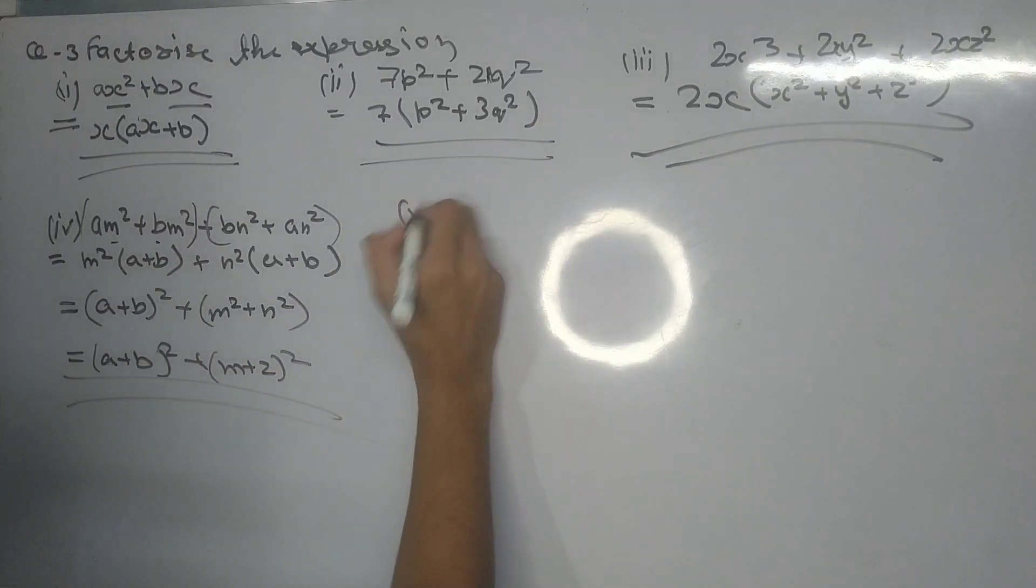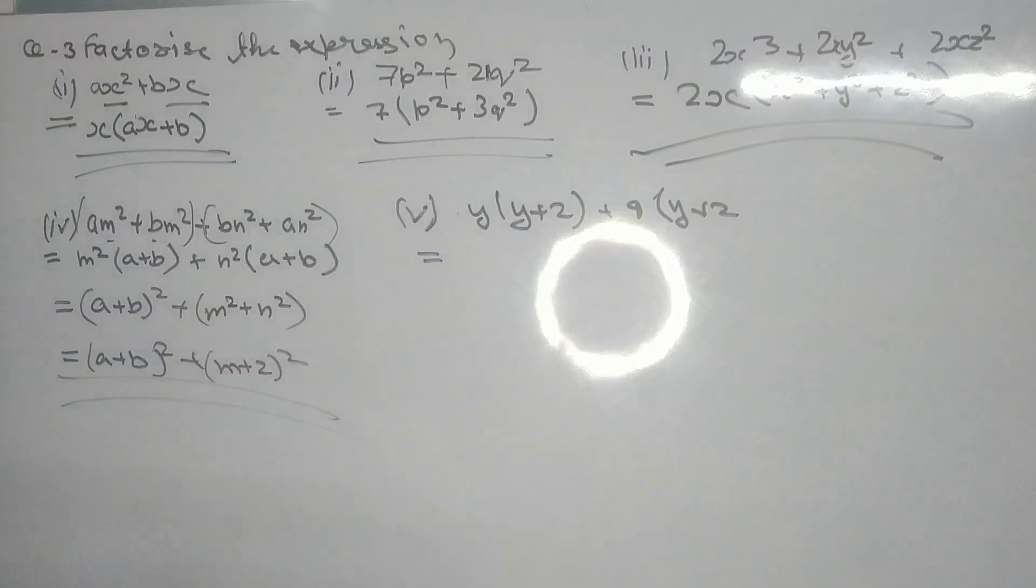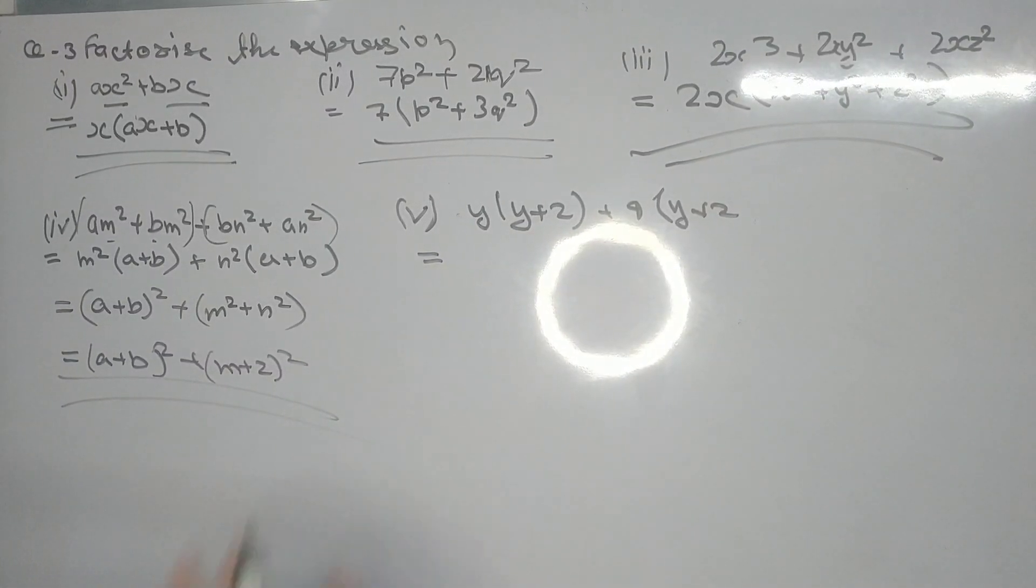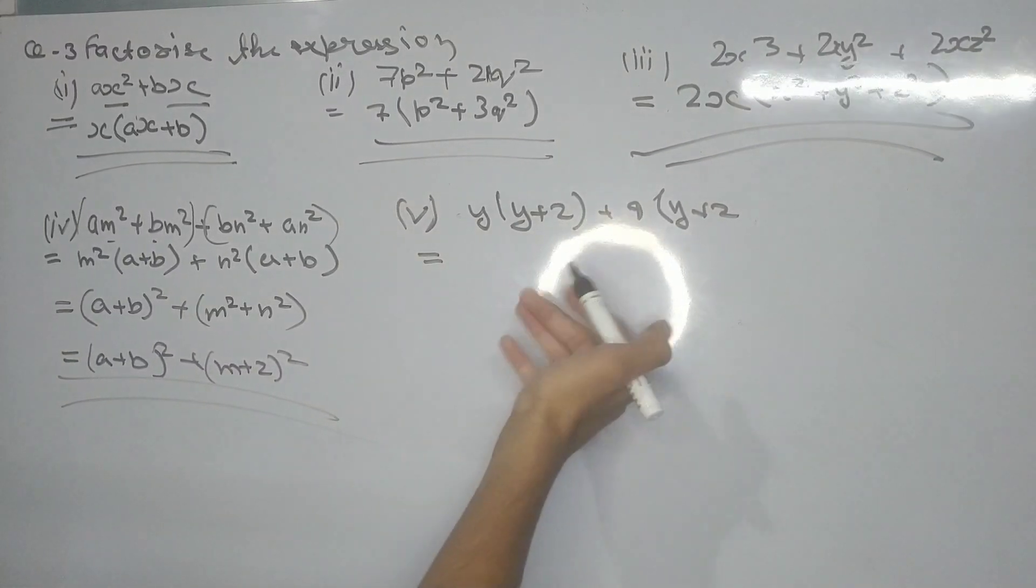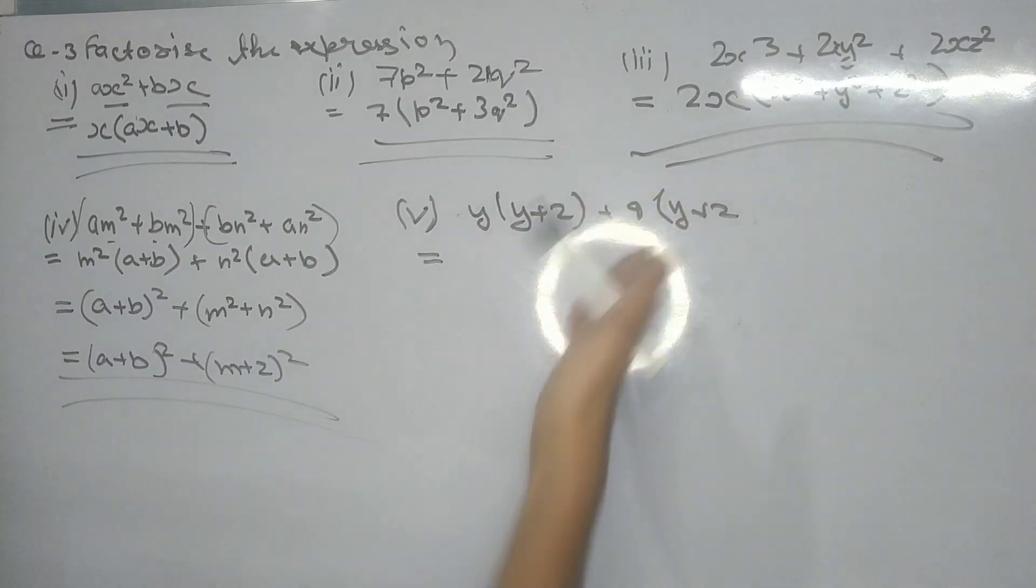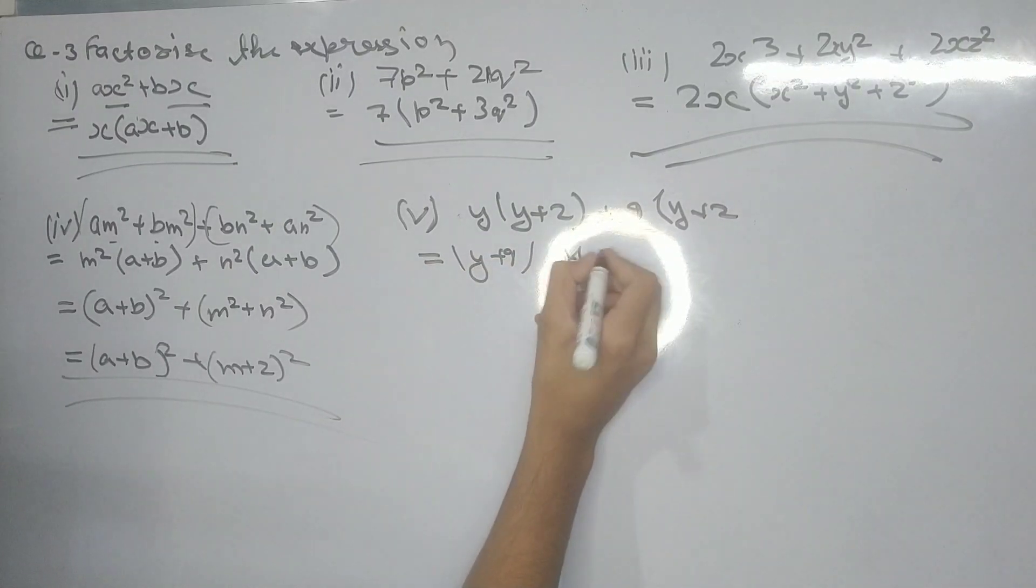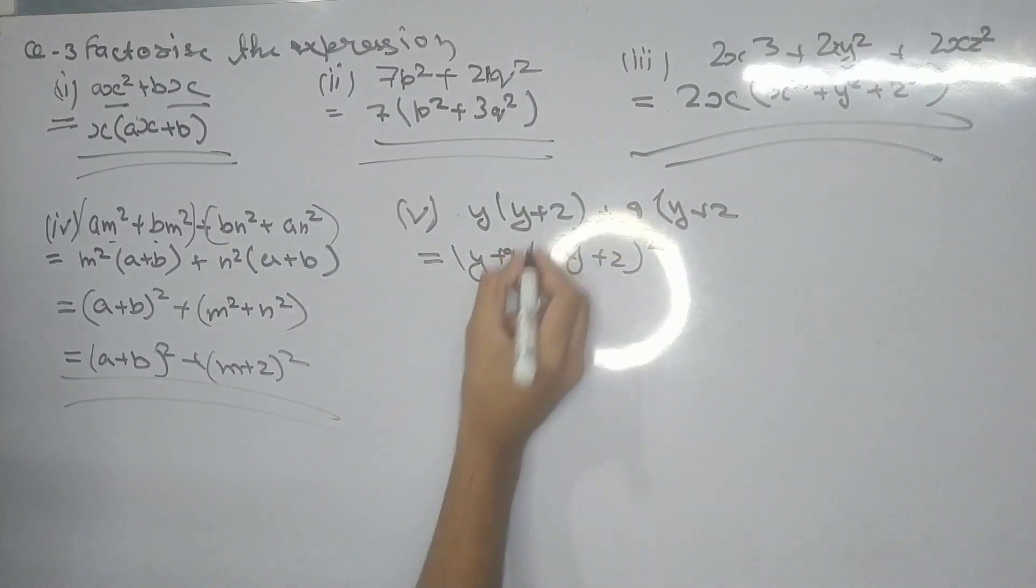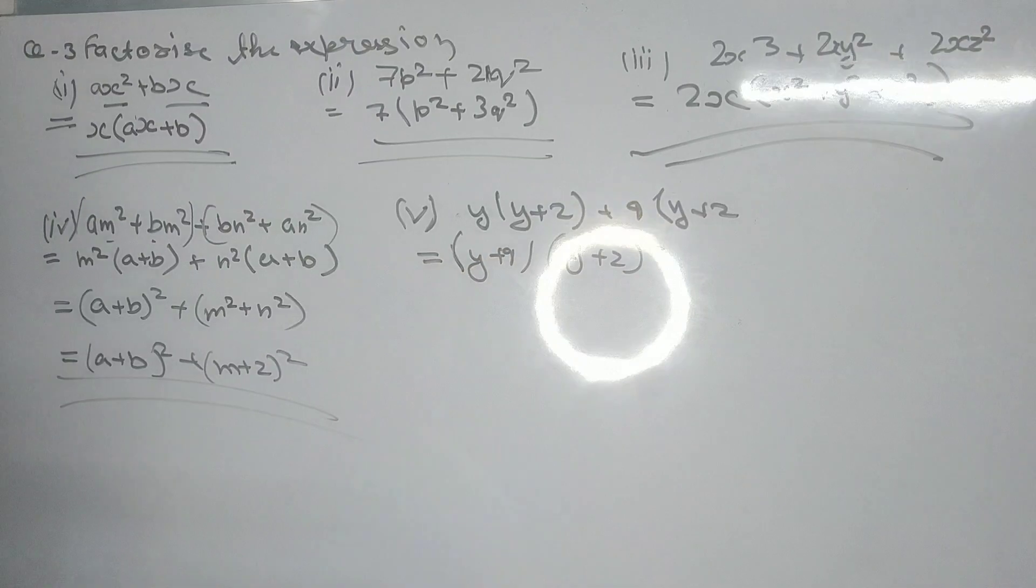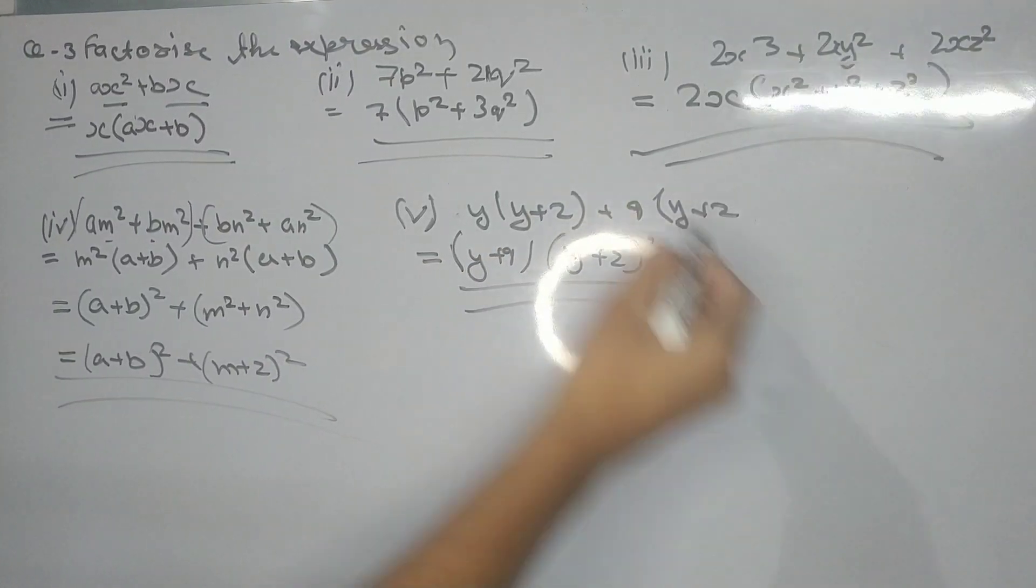Part (v) is the easiest part as we have the expression already in the correct factored form. We just write it as is. That's all for this part.